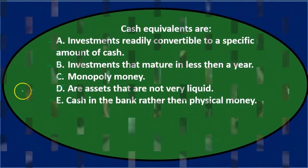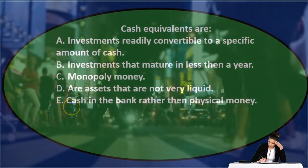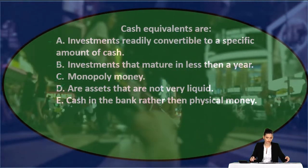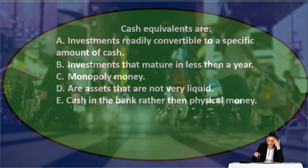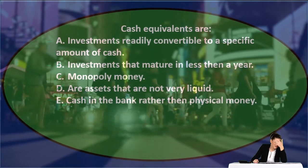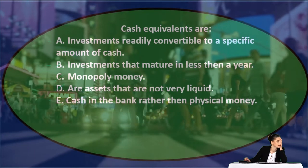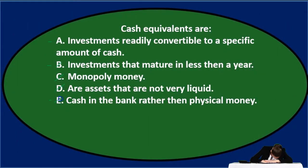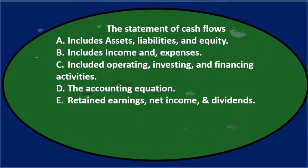I'm going to choose A over B. E says cash in the bank rather than physical money — that would mean a cash equivalent is digital cash as opposed to physical cash, but that's not really the difference. Cash in a checking account is still just cash. Cash equivalents are something different — some types of investments that are very, very liquid. So the answer is A: cash equivalents are investments readily convertible to a specific amount of cash.